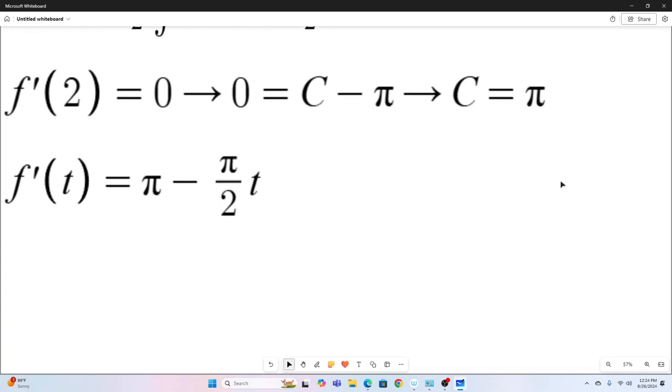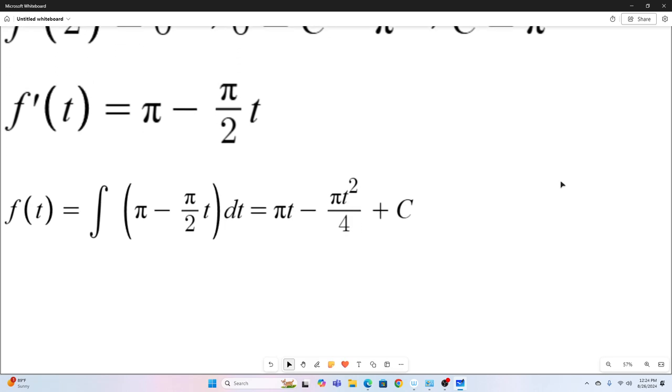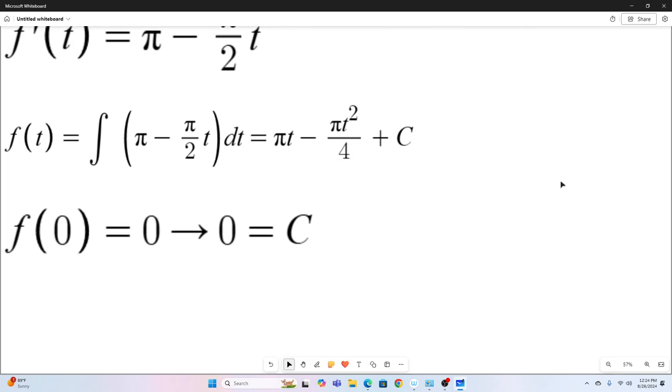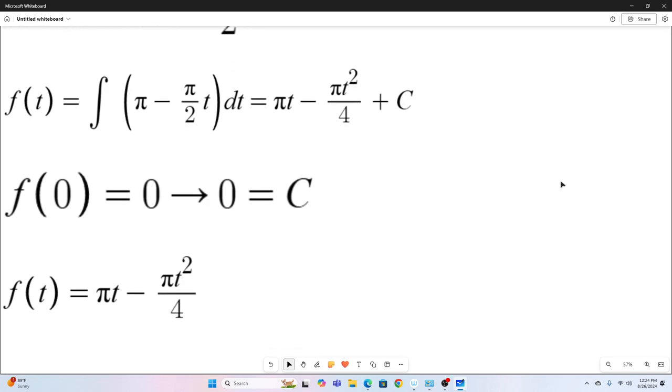All right, so now we integrate again to get back to F of T. Integrating that is just going to give us pi T minus pi T squared over four plus C. And then we use F of zero equals zero to give us C is equal to zero. So our F of T is pi T minus pi T squared over four.